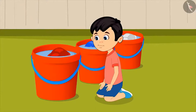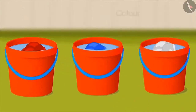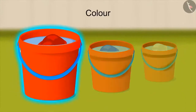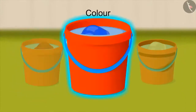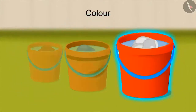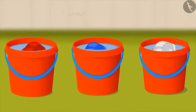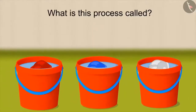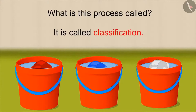Oh-ho! Let me do it correctly now. Chotu takes all the clothes out of the bucket and then puts all the white clothes in one bucket, blue clothes in the second bucket, and all the red clothes in the third bucket. In this way, on the basis of the characteristic of color, Chotu has classified and made different groups — this process is called classification.